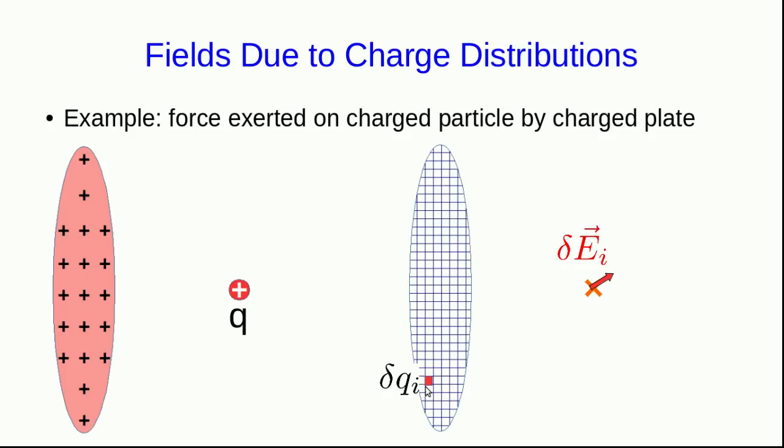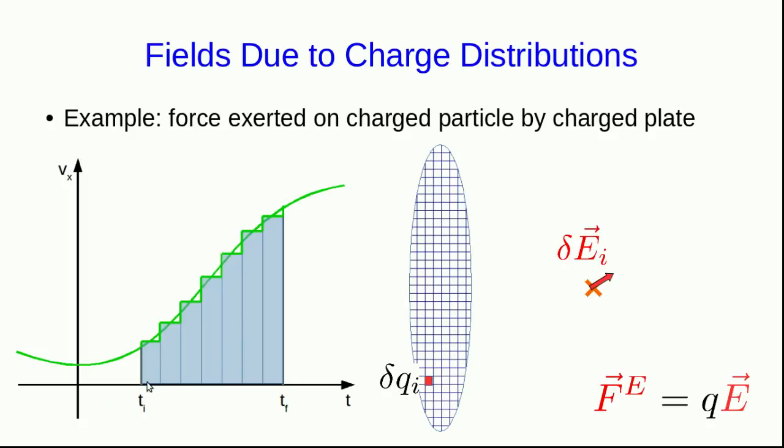And in the limit as those pieces go to zero size, we end up getting a precise prediction for the electrical field at this location. Once we know that electrical field, we can just use our definition of the E field to get the force on our particle. I hope this is ringing bells because this process of breaking the plate up into little bits and summing up the contributions due to those little bits and letting the size of the little bits go to zero is exactly like what we've seen before for doing things like displacements due to changing velocities and so on. And just like in those cases, it leads us to doing integration.